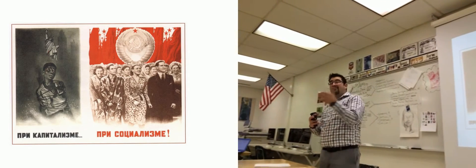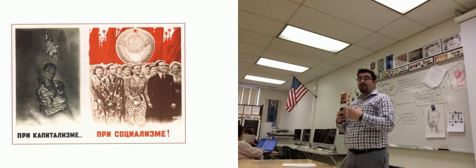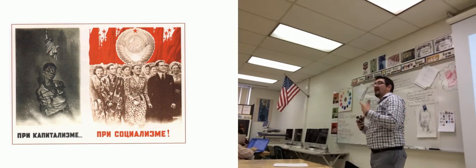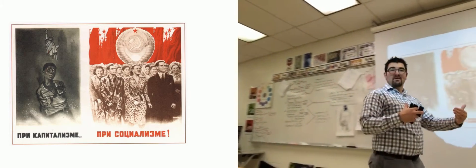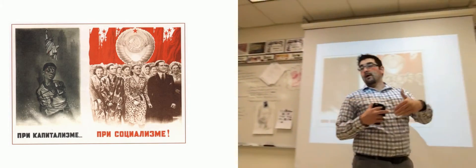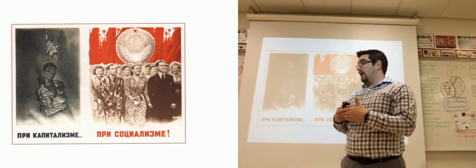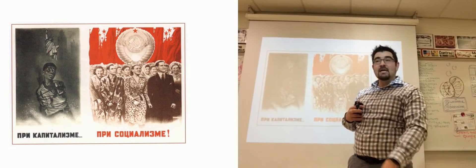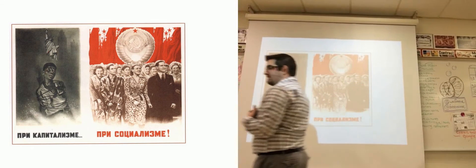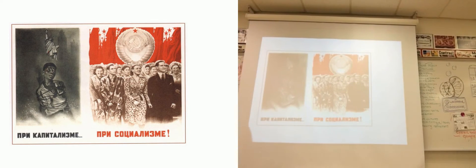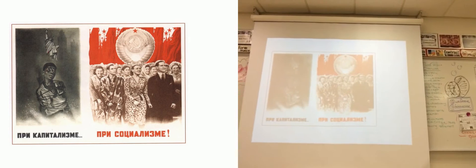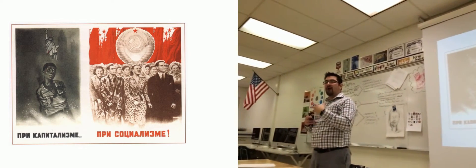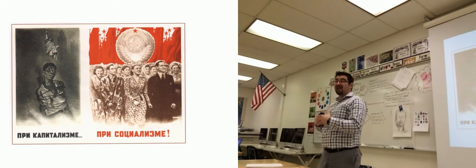But after 60 years of separate but equal, it was clear to everybody that separate was rarely, if ever, equal. This idea would be challenged in Topeka, Kansas, by a little girl and her family that was supported by a group called the NAACP.